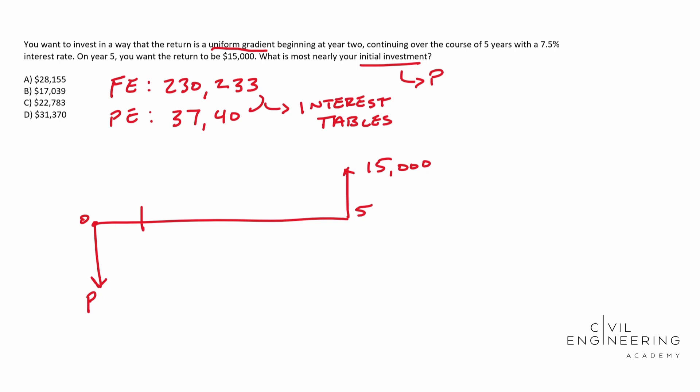We have one, two, three, four, and five. So we have year one, year two, year three, year four, and year five.